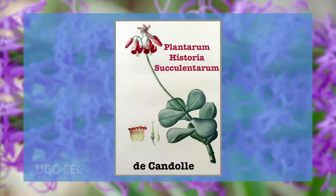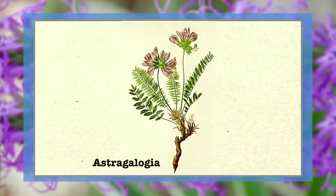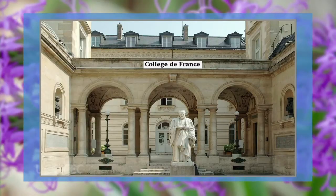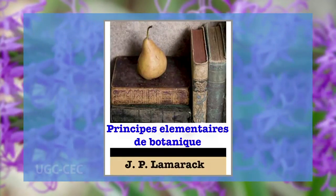De Candolle's first book, Plantarum Historia Succulentarum, published in 1799, and Astragologia, published in 1802, brought him to the notice of Georges Cuvier and Jean-Baptiste Lamarck. De Candolle, with Cuvier's approval, acted as deputy at the Collège de France in 1802. Lamarck entrusted him with the publication of the third edition of the Flore Française, and in the introduction entitled Principes Élémentaires de Botanique, De Candolle proposed a natural method of plant classification as opposed to the artificial linear method. The premise of De Candolle's method is that taxa do not fall along a linear scale; they are discrete, not continuous.